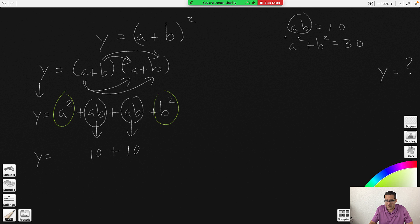And if you notice, you're left with this a exponent 2 plus b exponent 2, which is the same as this a exponent 2 plus b exponent 2, which you said was how much? a exponent 2 plus b exponent 2 is going to be 30. So how much do you have now? 10 plus 10 plus 30. 10 plus 10 is 20, plus 30 is 50. y equals 50.